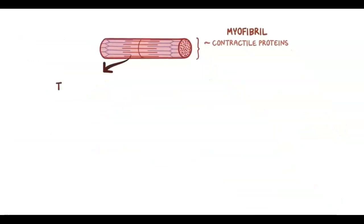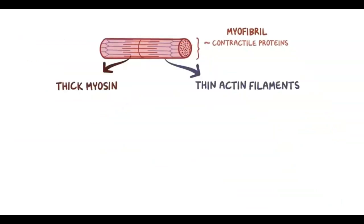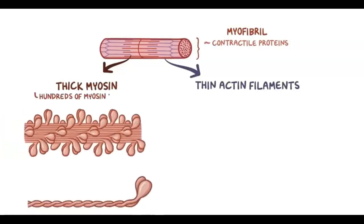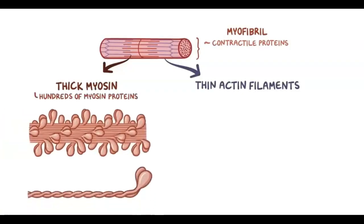Contractile proteins include thick myosin and thin actin filaments. The thick myosin filament is made up of hundreds of myosin proteins, and each myosin protein has a tail and two myosin heads. It looks kind of like two golf clubs with their handles twisted around each other. Multiple myosin proteins join their tails together to form the central part of the thick filament.